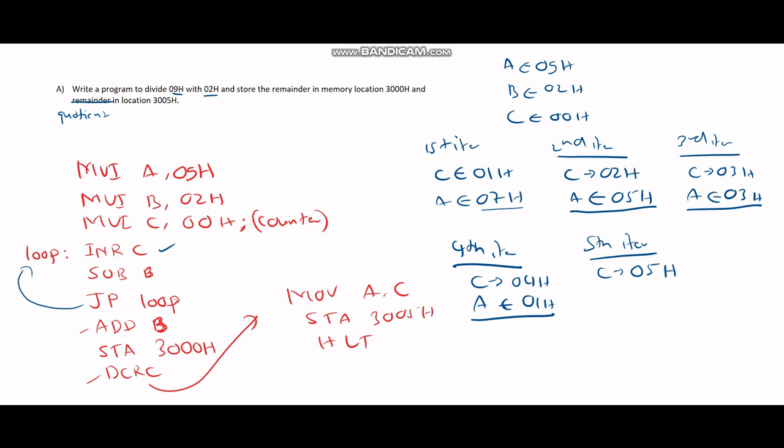Then we increase our counter 1 and then we subtract 1 minus 2. Now this is going to give me a result of minus 1. Now this is a negative value, so my program is not going to go to this loop. Instead, it will come down here to add.